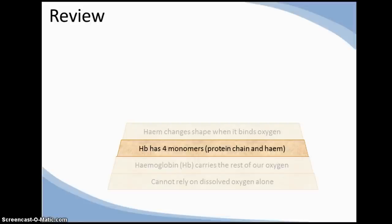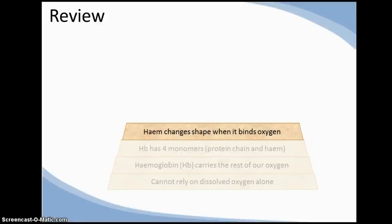We discussed how when heme binds oxygen, its shape changes by a tiny, tiny 40 picometres. Although this change is small in magnitude, the knock-on effects have enormous implications for how we transport oxygen.